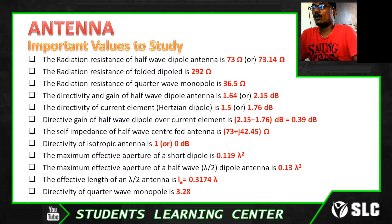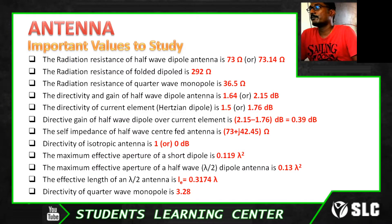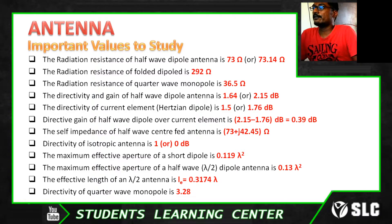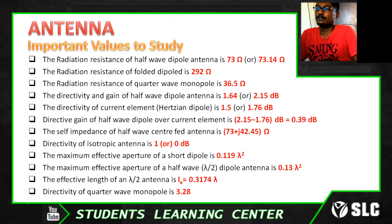The directivity of an isotropic antenna is 1 or 0 dB. The impedance of a half wave center-fed antenna is 73 ohm + j42.45 ohm.